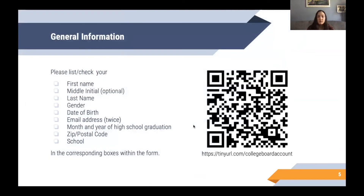The first part of the form asks for some general information about you. In the corresponding boxes, please respond with your first and last name. You may provide your middle initial if you have a common name or desire to. Also include your gender, date of birth, email address, the anticipated month and year of your high school graduation, your zip or postal code, and the school you attend. Feel free to pause the video to fill out this information, and we will return with the username and password creation section of the form.